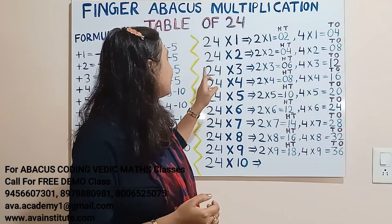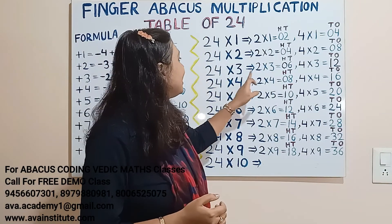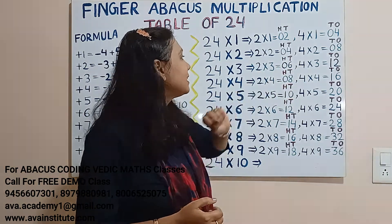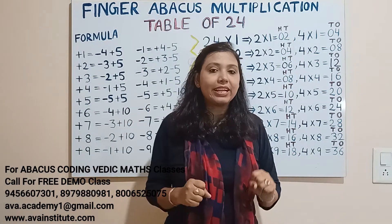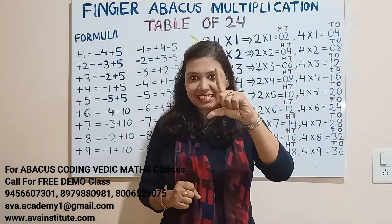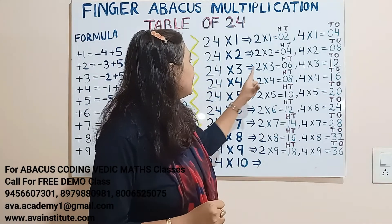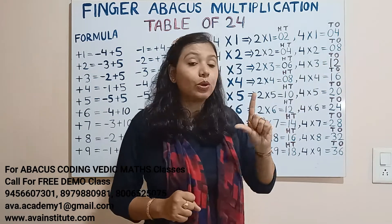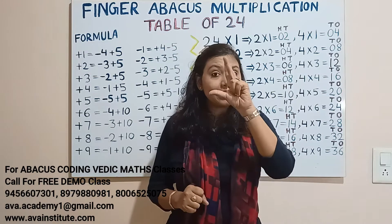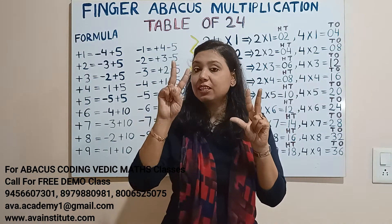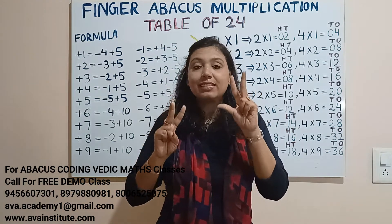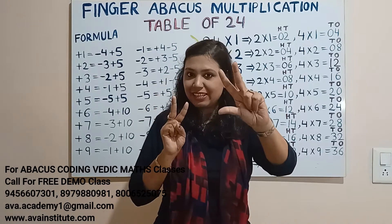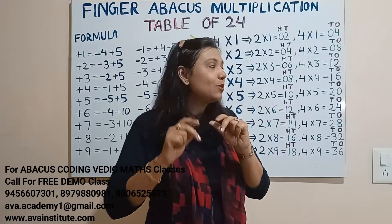Next, 24 threes are: 2 threes are 6 — in hundreds 0, in tens 6. Now 4 threes are 12 — in tens 1, in ones 2. In tens we represent 1, in ones we represent 2. So the answer is 72 — that is 70 plus 2, so 72.